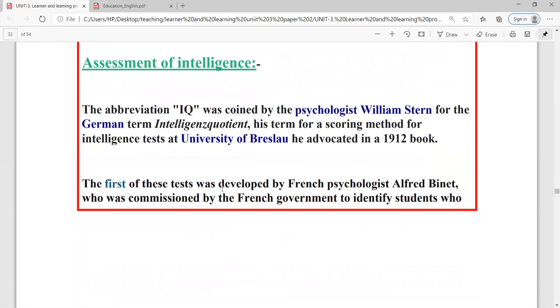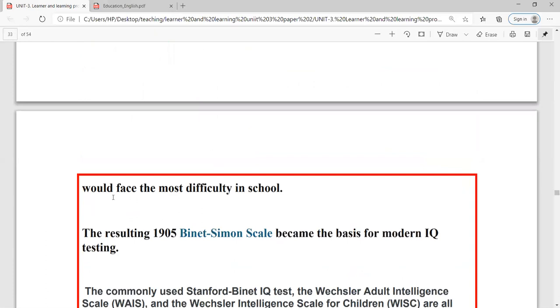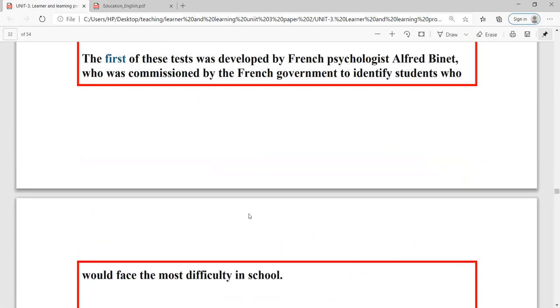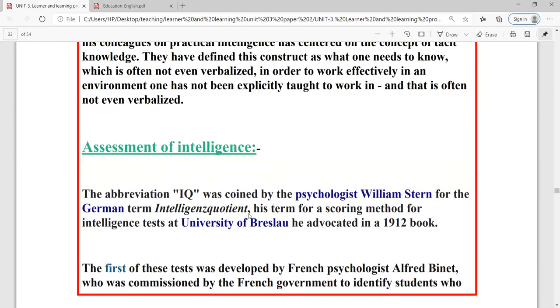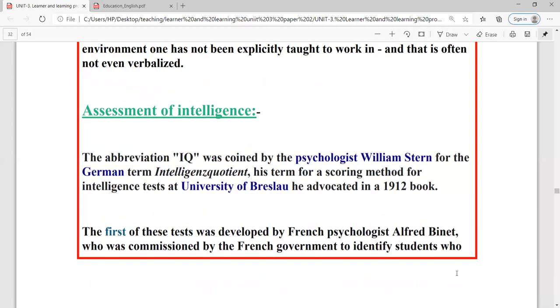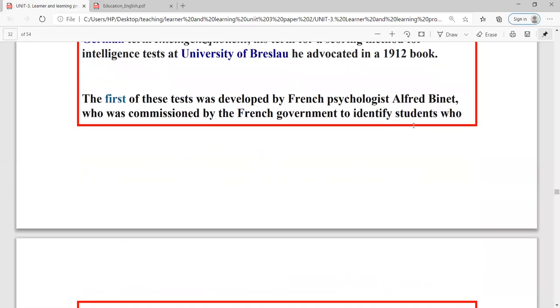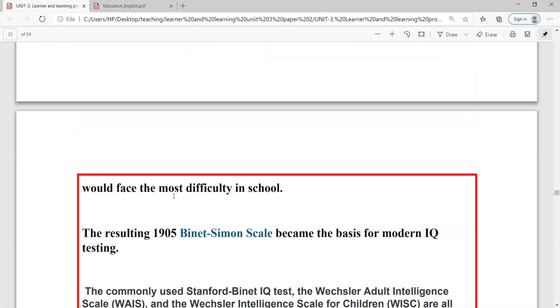The first of these tests was developed by French psychologist Alfred Binet, who was commissioned by the French government to identify students who would face the most difficulty in a school. Now, the way to measure the IQ, the way to find out, the first time Alfred Binet found out. Remember that Stern had given the IQ word or term. If you ask who coined the term IQ, the answer will be William Stern. But the first time he did was Alfred Binet.